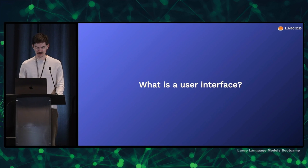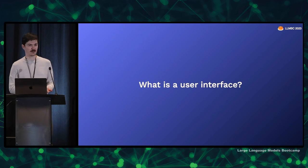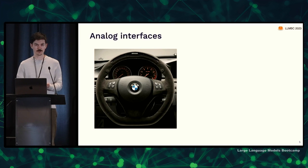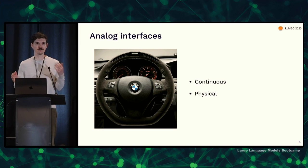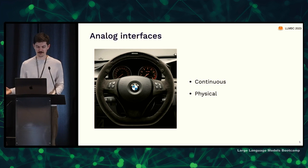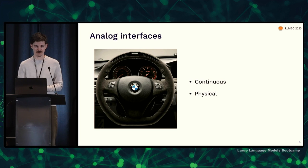So what is a user interface? To me, it's just anything where a person meets the world, however that happens. Most interfaces in the world are analog, which means they're continuous — I can move this object — and they're physical. They exist in the physical world. Most tools are physical, and for basically all of our history, everything has been analog, continuous, and physical.